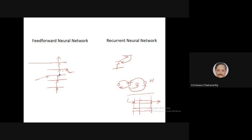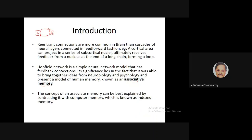In the brain it's very common that if one cortical area A projects to another area B, very often area B projects back to A. So this kind of feedforward and feedback connection is very common, and such connections in the context of cortex are called re-entrant connections.